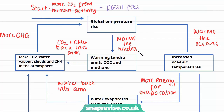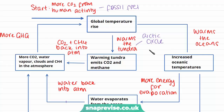Also, this global temperature rise is warming the tundra. The tundra is an area of the Earth around the Arctic Circle — a very cold but not glaciated landscape where a lot of the ground is frozen. A lot of CO2 and methane is stored within this frozen ground, in areas of northern Canada, northern Russia, and places like Siberia. When global temperatures rise, the tundra starts to thaw and melt, and the CO2 and methane stored in the ground is released back into the atmosphere.